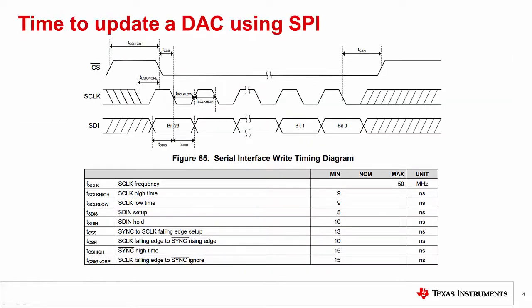Now that we have covered the basics of DAC settling time, let's talk about the time it actually takes to update the DAC's digital input code. Here we see a typical DAC's timing diagram and table for an SPI interface. At minimum, the device will need at least one SPI command to update the DAC's value.